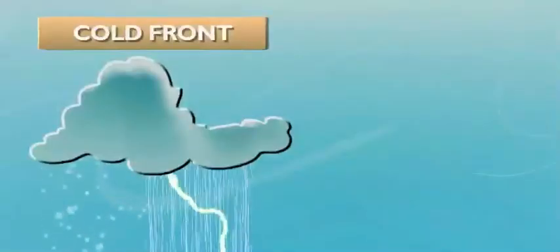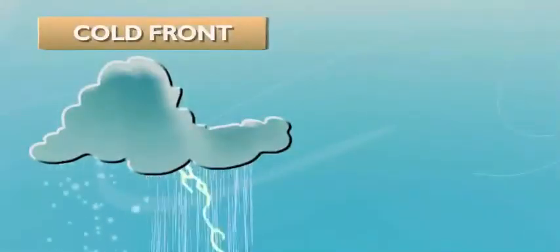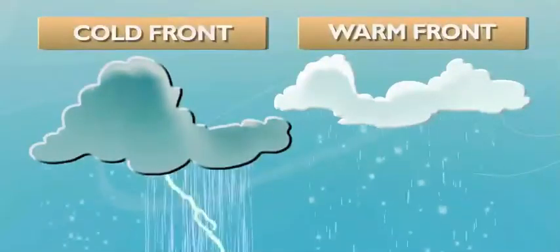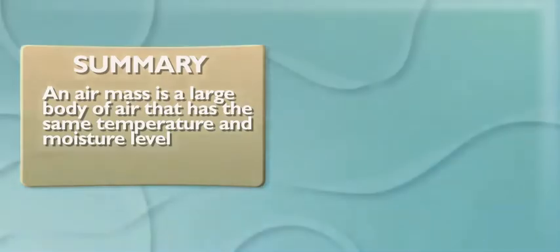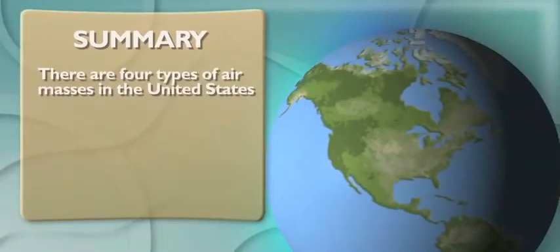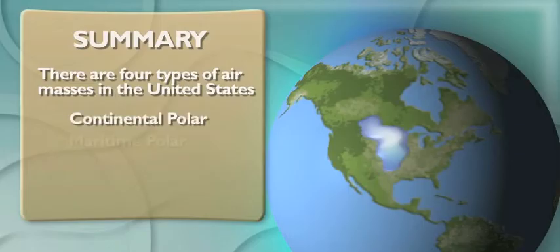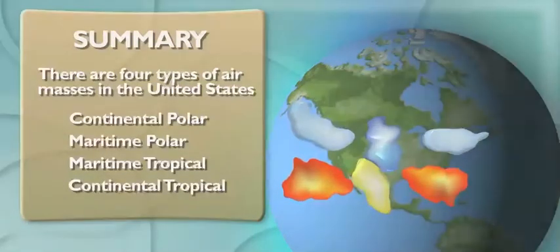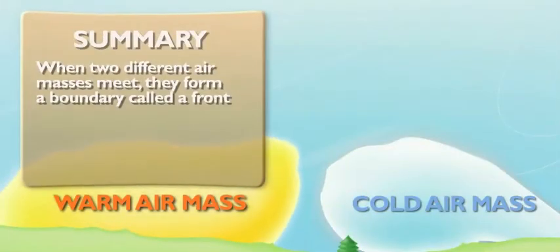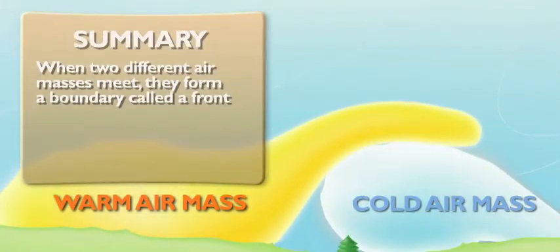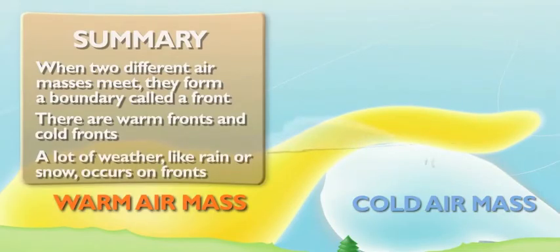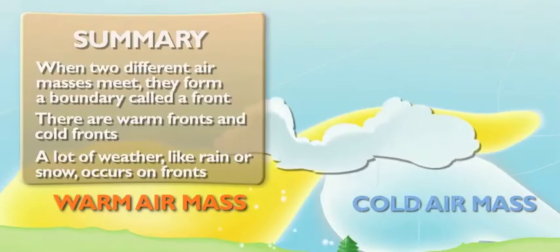A cold front means pretty crazy weather that gets me a snow day. And a warm front just means it might still rain or snow, but it won't be as intense. An air mass is a large body of air that has the same temperature and moisture throughout, and there are four types of air masses in the U.S. Each one has unique characteristics that hint at where it formed. When two of these air masses meet, they form a boundary called a front. It can be a warm front or a cold front, but either way, some kind of weather always happens on a front.